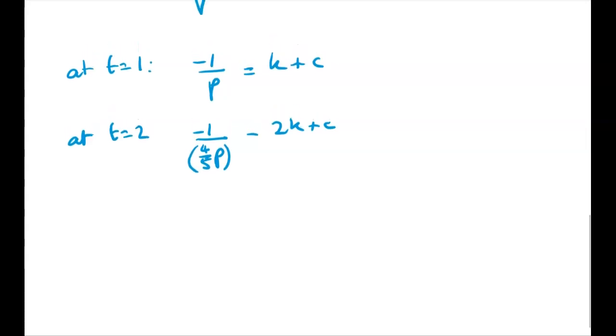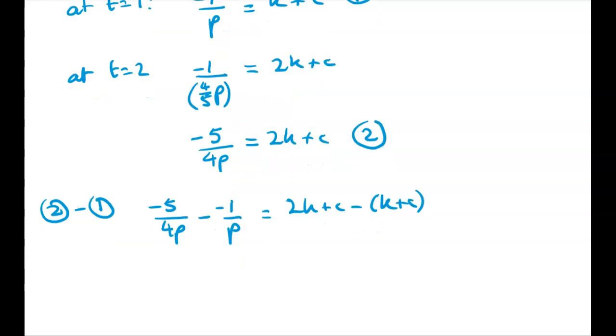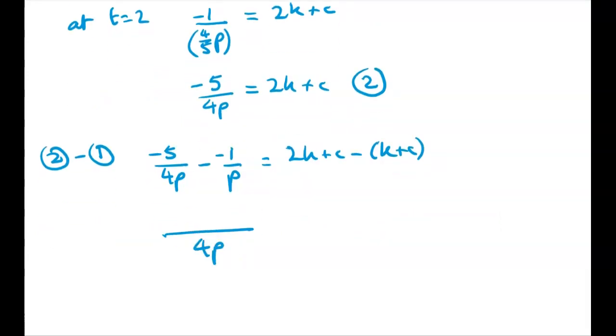I'm also going to rewrite the second one as negative 5 over 4P is equal to 2K plus C. I'm going to call that one equation 2 and that one equation 1. So equation 2 minus equation 1 gives me negative 5 over 4P minus negative 1 over P is equal to 2K plus C minus K plus C. Getting a common denominator here gives me 4P in the denominator, negative 5 plus 4 is equal to negative 1. So negative 1 over 4P is equal to K.